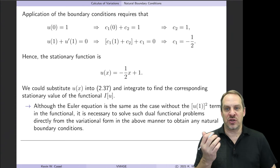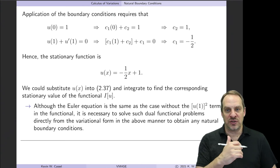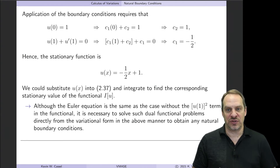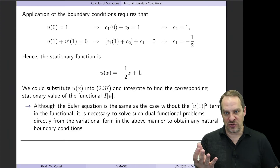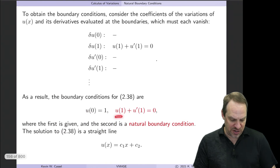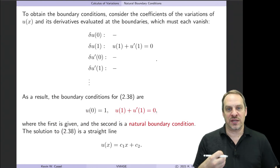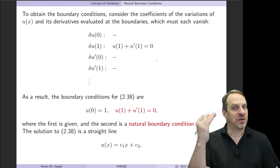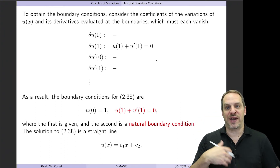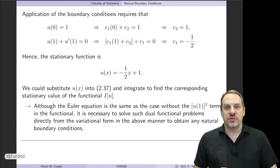The Euler equation u'' = 0 can also be obtained from the standard formula: ∂f/∂u minus d/dx of ∂f/∂u' equals zero, so you can use that to check. However, to get the natural boundary condition, the only way is to take the variation of i, set it equal to zero, follow through the integration by parts, and see what arises naturally from that derivation.